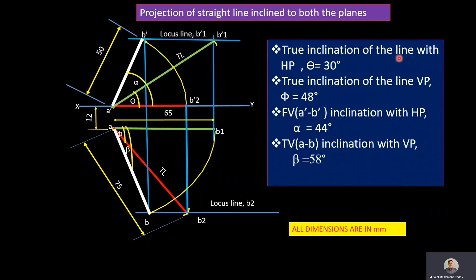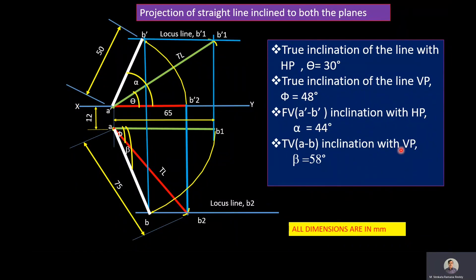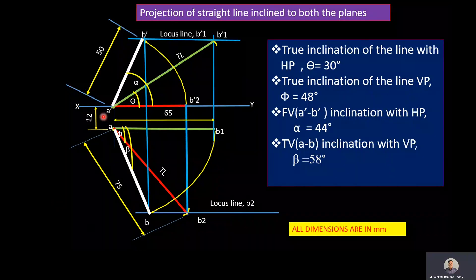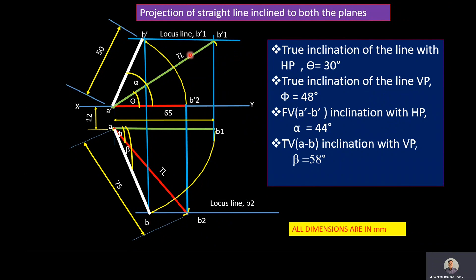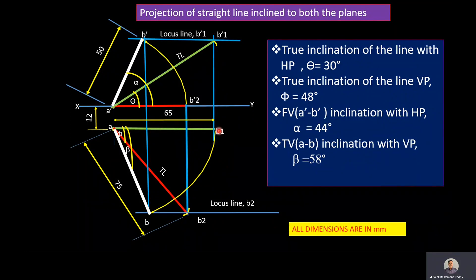The true inclination of the line with HP, theta, is equal to 30 degrees. The true inclination with VP, phi, is equal to 48 degrees. The front view inclination with HP, alpha, is 44 degrees. The top view inclination with VP, beta, is 58 degrees. In the diagram, the final projections A'B' and AB should be drawn darker than the true lengths and initial front view A'B2' and initial top view AB1.